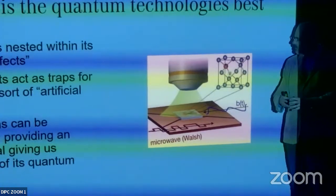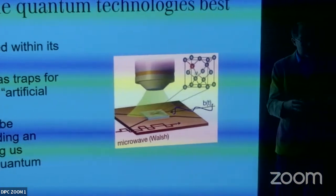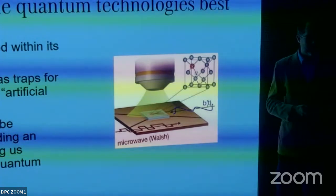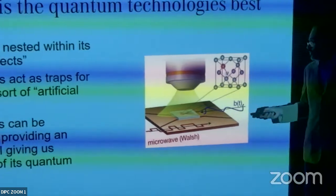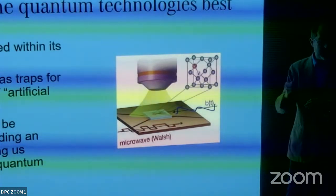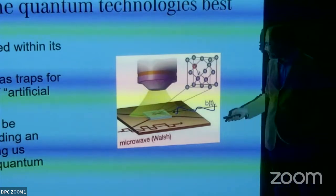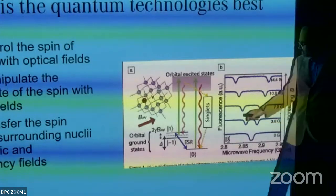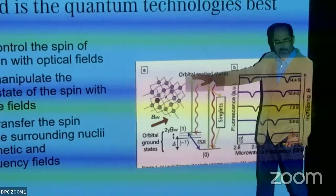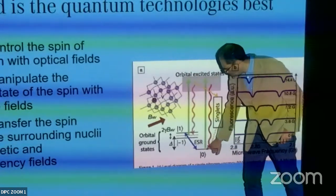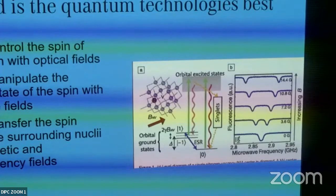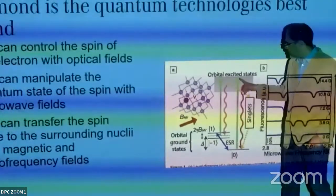We can control the spin of the electrons with microwave fields. Here is a sketch of the energy levels: a ground state and an excited state, with three sub-levels (m_s = 0, +1, −1) representing the spin. If you pump with green light, the system de-excites and emits red light. The system returns to the same state — except that for m_s = ±1, part of the population goes to a metastable state and doesn't radiate.